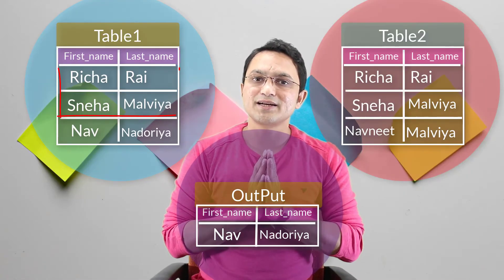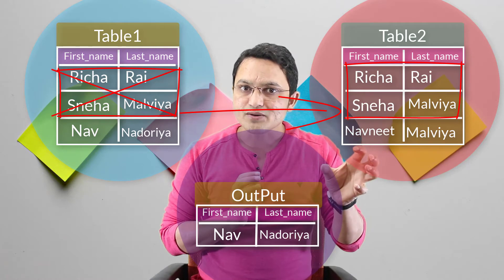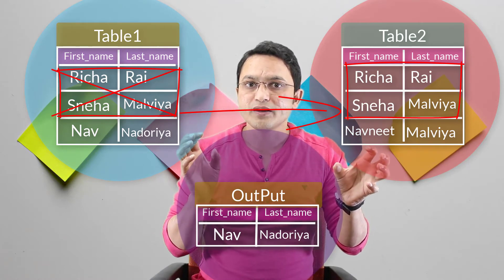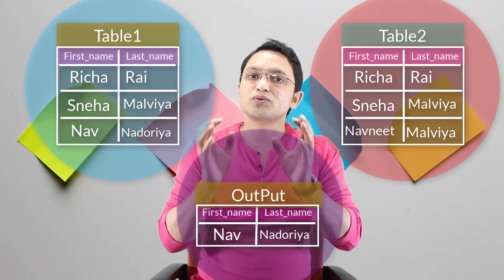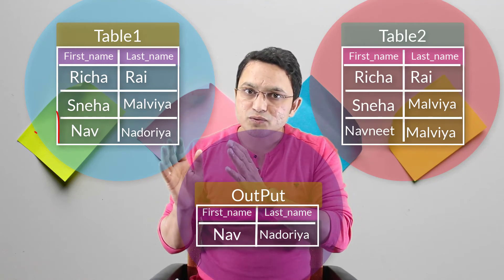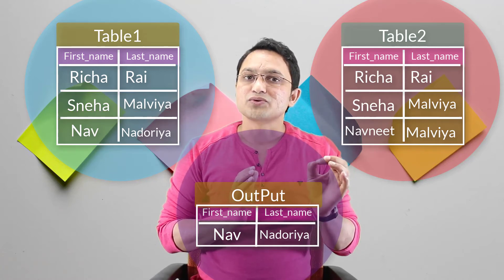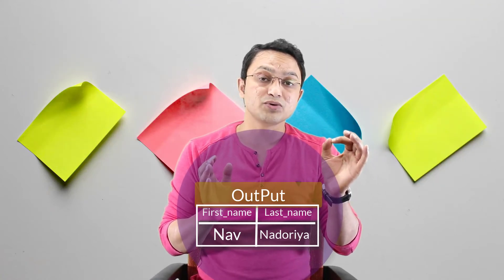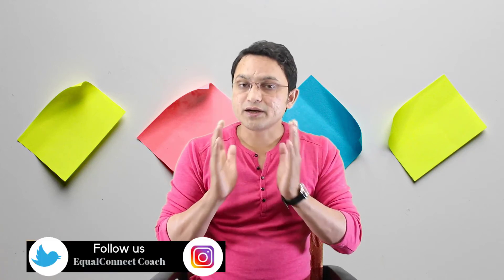So how exactly does it work? Whatever rows are in the second query, it checks whether those rows are present in the first query. If they are present, it removes those rows from the first query. Whatever leftover rows remain from the first query, that is the result returned. In short, the common rows between both queries are removed, and the output comes from whatever remains in the first query.